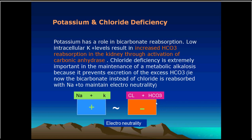Decrease in bicarbonate will be associated with increase in chloride, as in the case of diarrhea. Conversely, in cases of vomiting, there is a loss of chloride, so decrease in chloride will be associated with increase in bicarbonate. The two together will always sum to 130 mEq. This is electroneutrality.